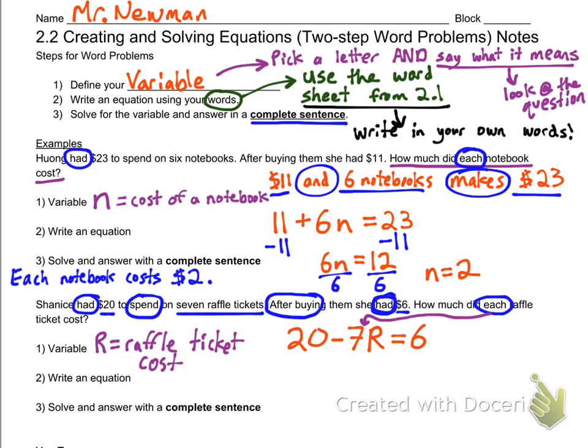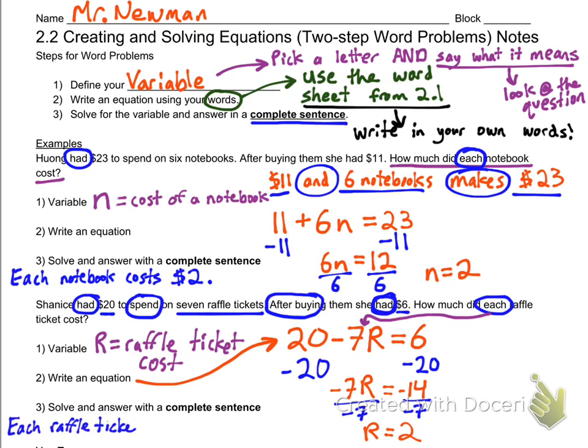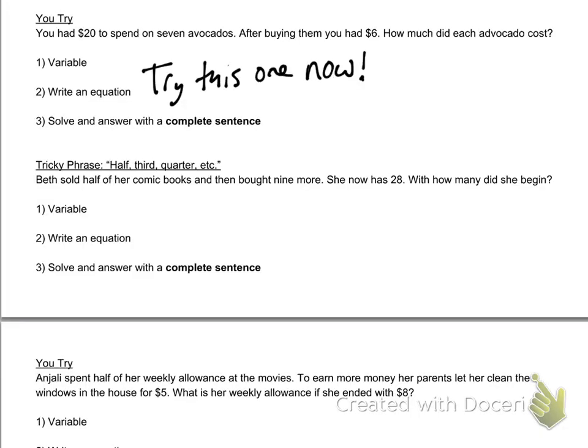Each suggests that we should multiply, and sure enough that multiplication happens right there: seven times R, because each raffle ticket costs R dollars. Now we can just solve this. That is our equation. Subtract 20 from both sides—make sure you have negative 7R equals negative 14. Divide by negative seven and you get R equals 2 again, so the cost of each raffle ticket is $2.